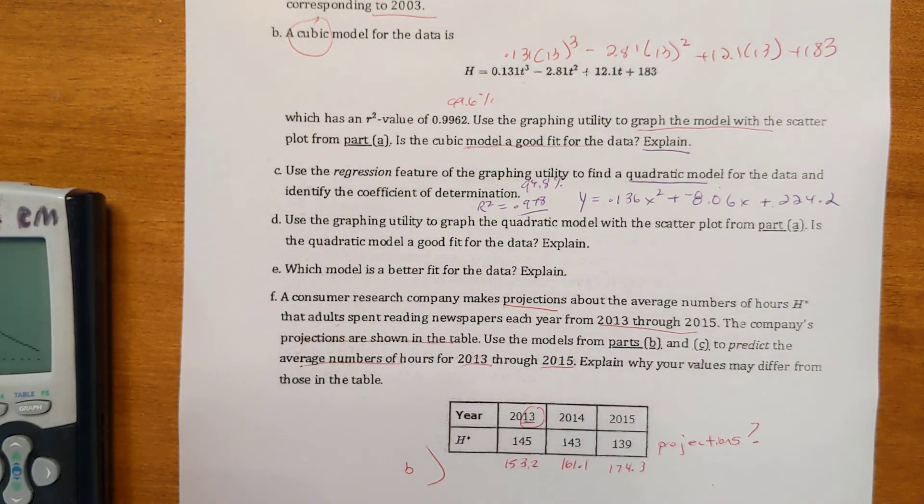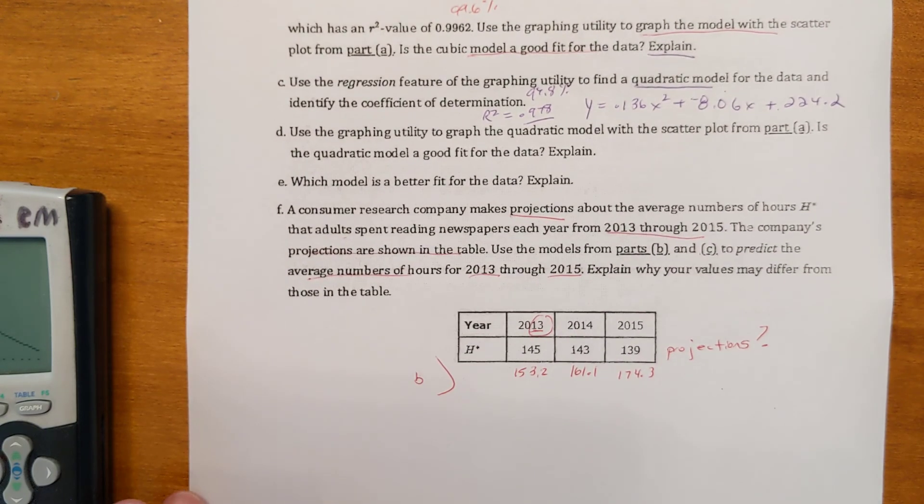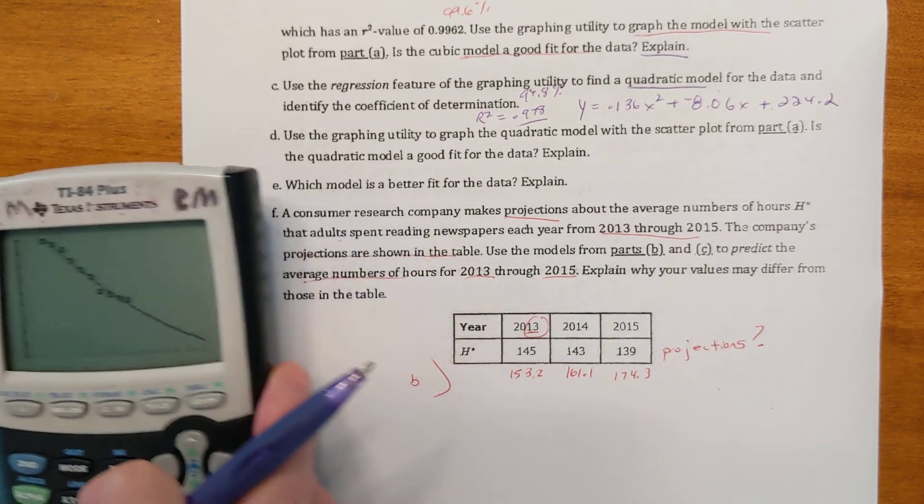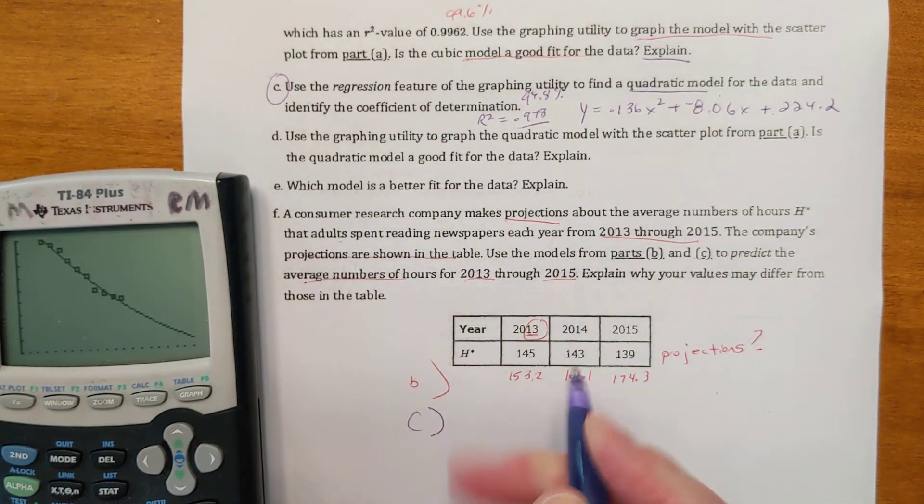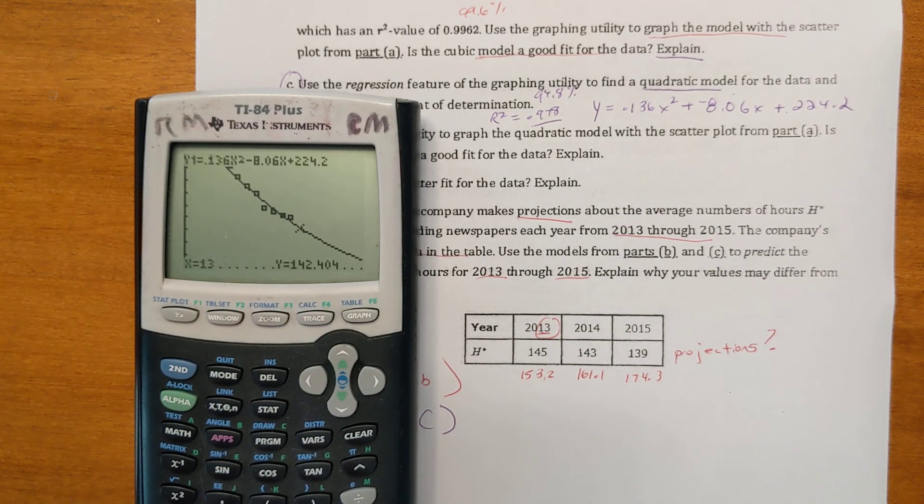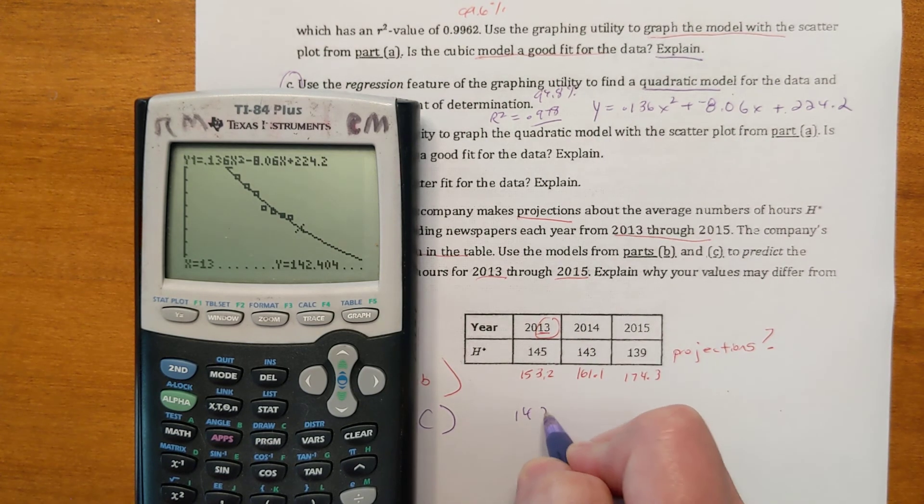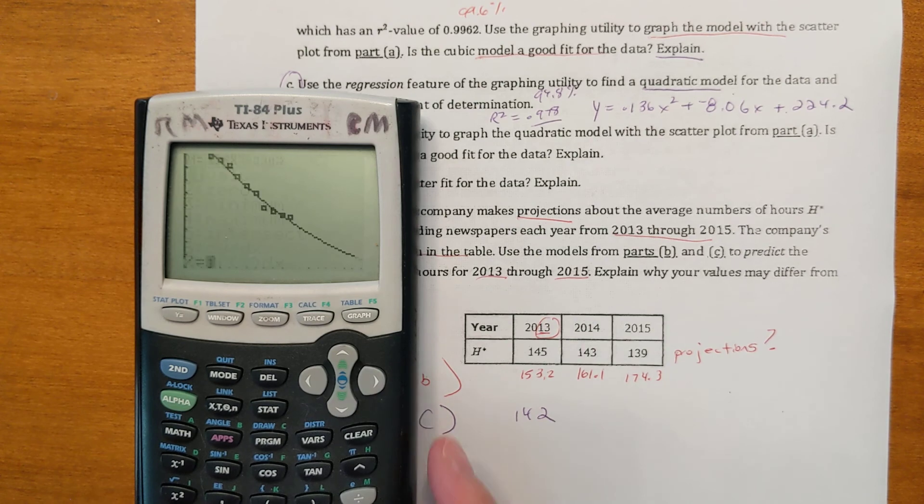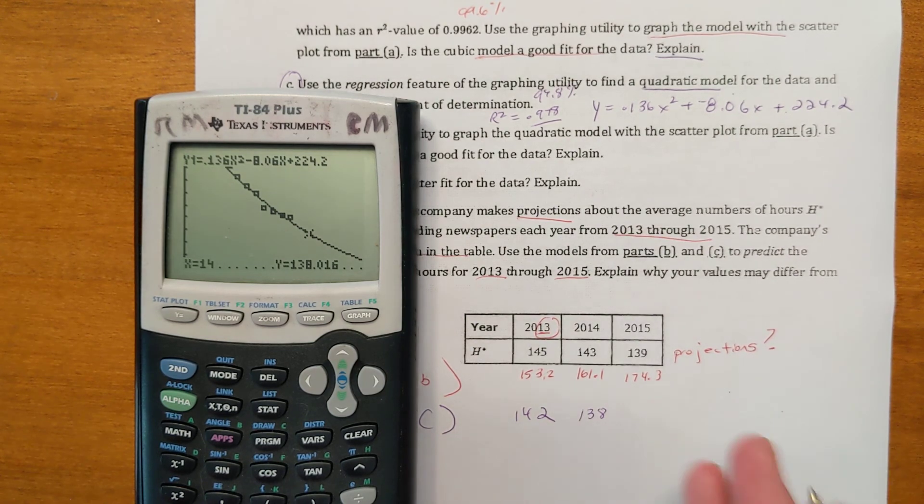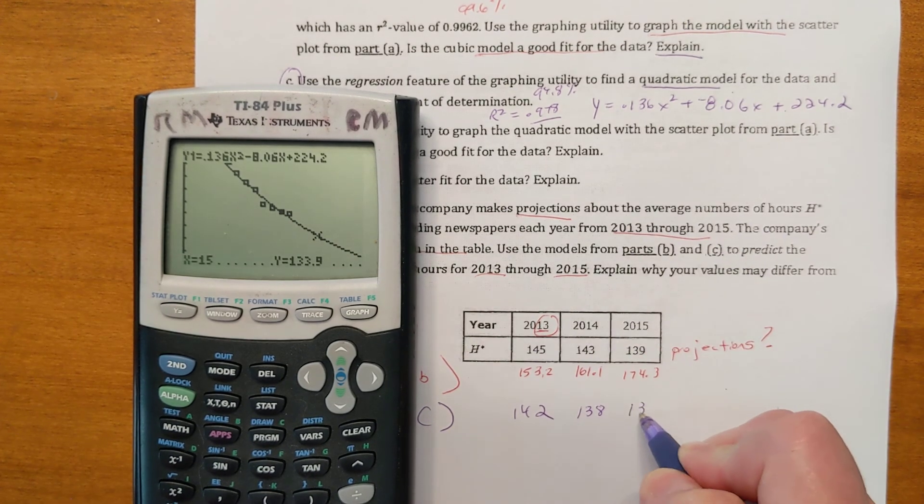Which model would be a better fit? Going back down to f, it wants to know what kind of numbers did we get for that if we projected it ourselves for 2013, 14, 15. Using the model from C, go to second calculate the value for 13 and I get 142. Second calculate the value for 2014. So the numbers are going down, which is good. At this other model, they went up, which just doesn't make sense. And last of all, 2015, get 133.9.